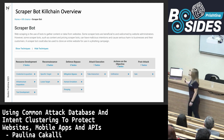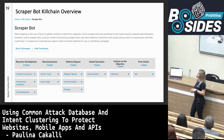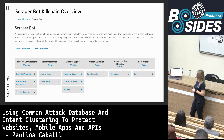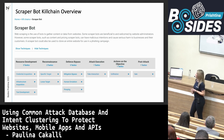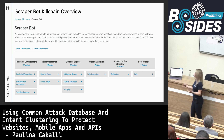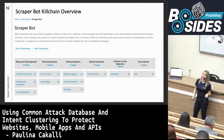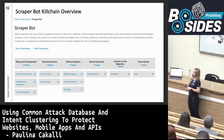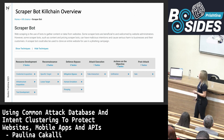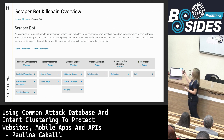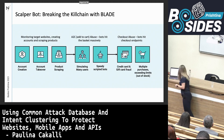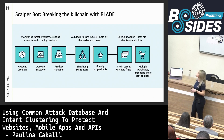Moving to scraper bots and scalping: web scraping is the use of bots to gather content or data from websites. They can scrape product endpoints and prices. It might be a competitor trying to clone your website, or they can manipulate prices — if you are selling the same products, they can undercut you and make more business. This also goes over six phases: resource development, reconnaissance, defense bypass, attack execution, actions on objectives, and post-attack.